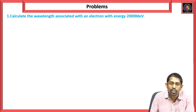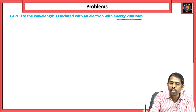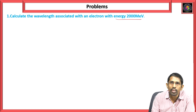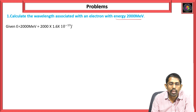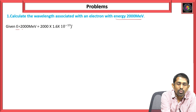This is the problem given. Energy is given here and we have to calculate the wavelength associated with these electrons. First of all, we are writing that energy.